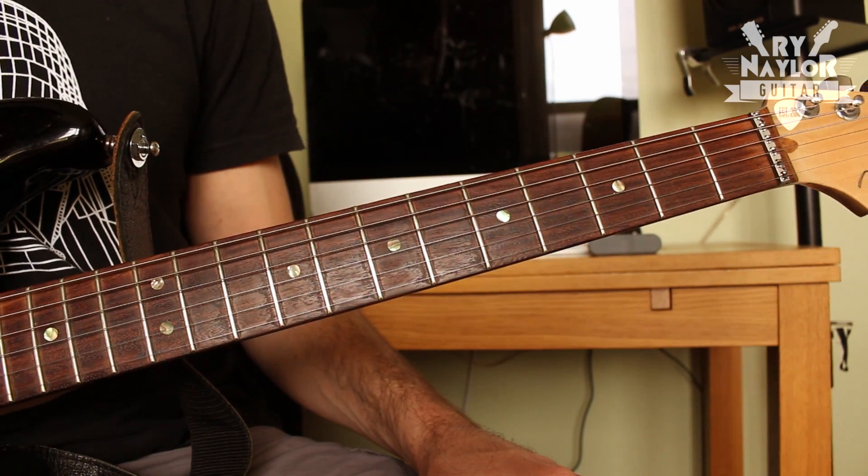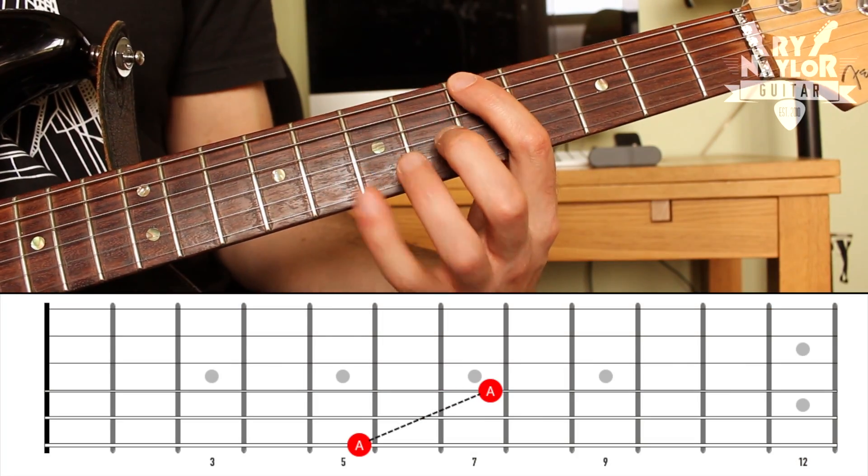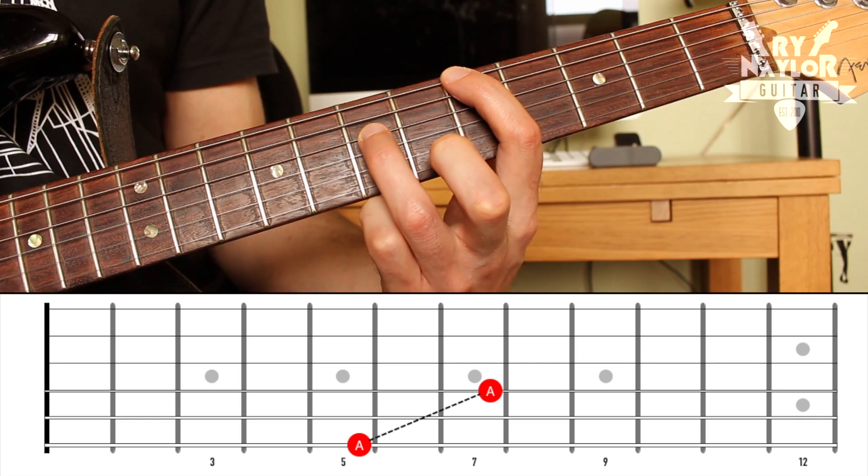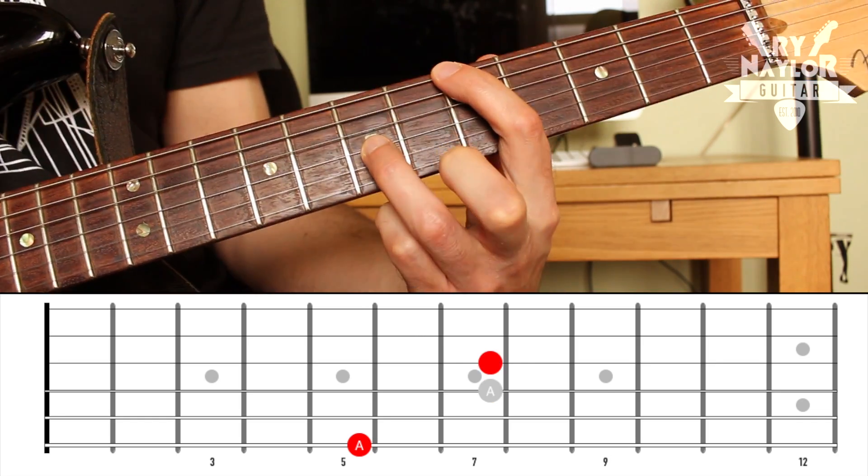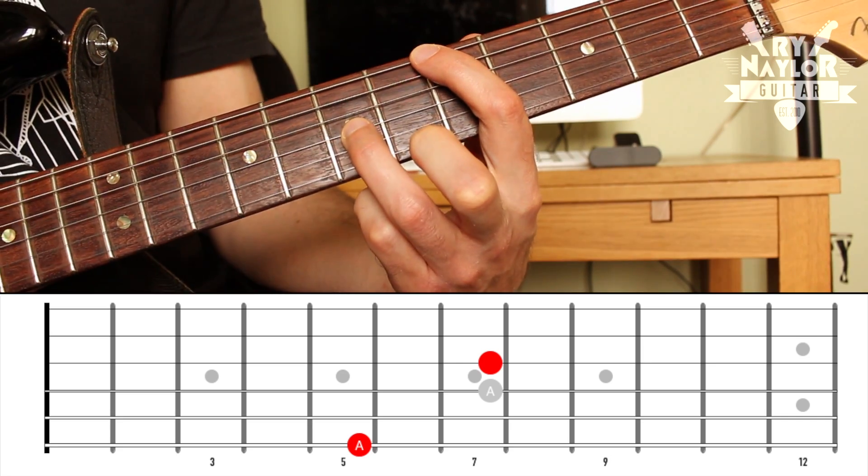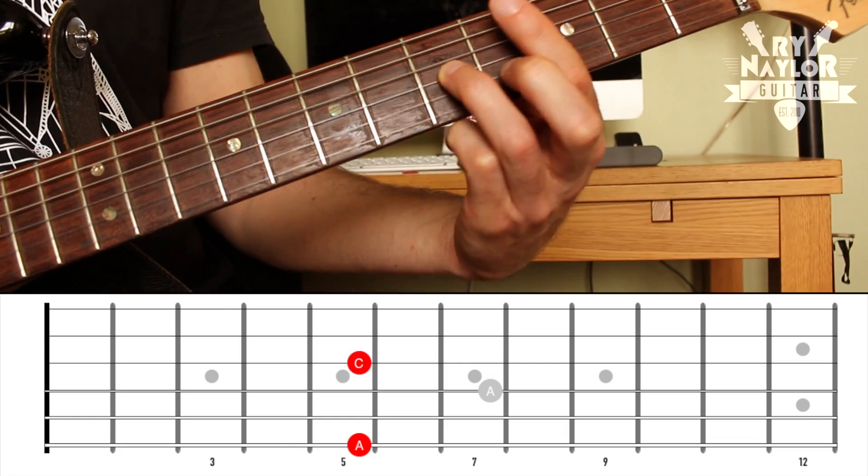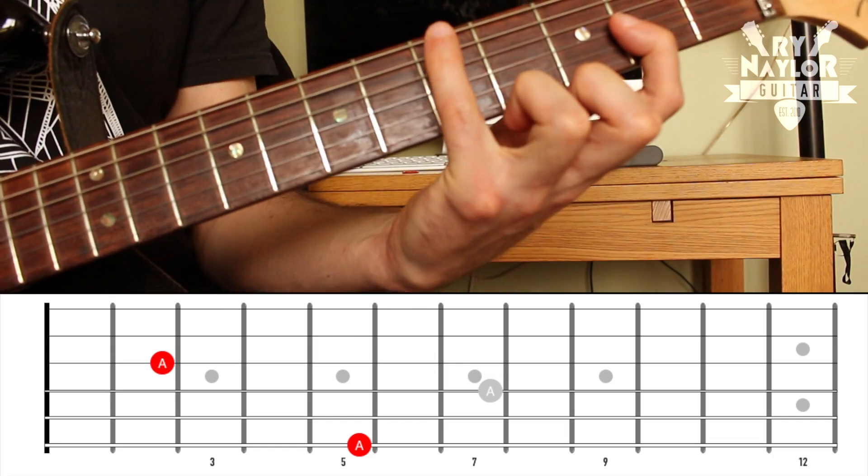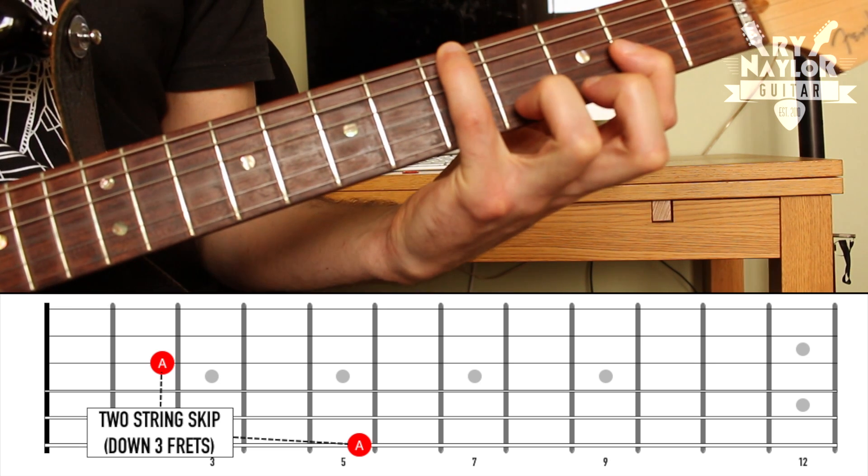What about two string skips? All right. So going back to my A, the octave was two frets higher on the D string. Now if I take that note down to the G string, I've got to take that note back five frets. So the octave is now going to be behind the bass note. One, two, three, four, five. It's right there. An octave there. Six to three.